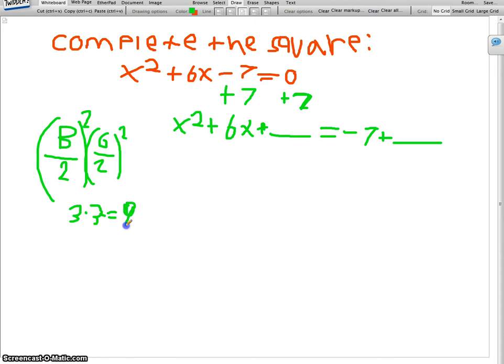Okay, 9. So you plug in 9 right here, and 9 on the other side. So then what you do is use diamond method.